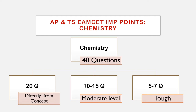In chemistry, there are 40 questions. About 20 questions are based on direct concepts — it is easy to get 10 to 15 questions correct. The next 5 to 7 questions are difficult, and the remaining are tough. With hard work, you can answer them. It is easy to score well.